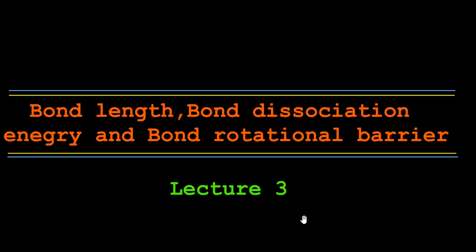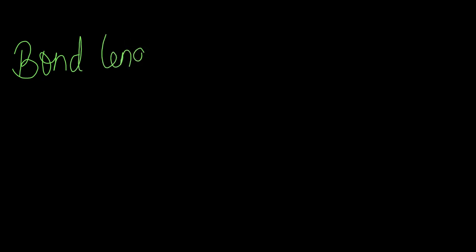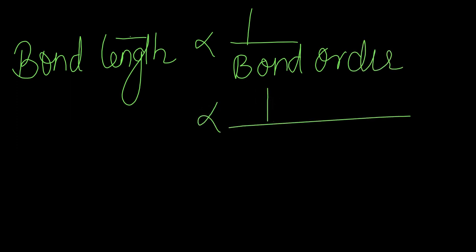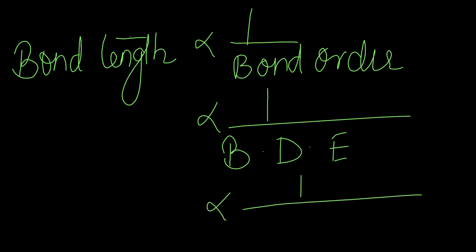Hello students, welcome once again for the session on bond length, bond dissociation energy, bond order, and bond rotational barrier. In the first or second lecture, we saw the relation between bond length, bond order, bond dissociation energy, and bond rotational barrier energy. Bond length is inversely proportional to bond order, bond dissociation energy, and rotational barrier energy.